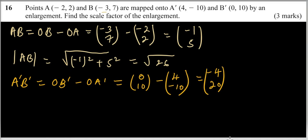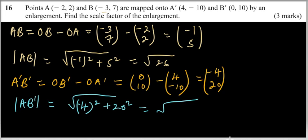From there, we get the magnitude of A'B', and that should give you the square root of (-4)² plus 20². So this is the square root of 16 plus 400. That should give you the square root of 416.